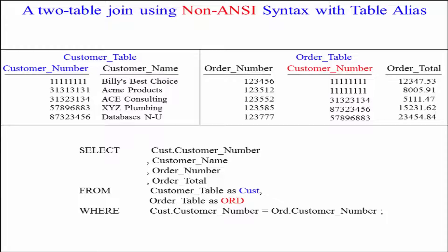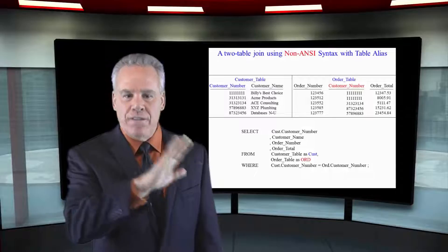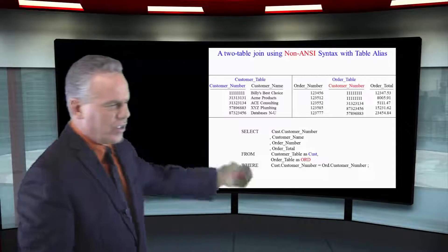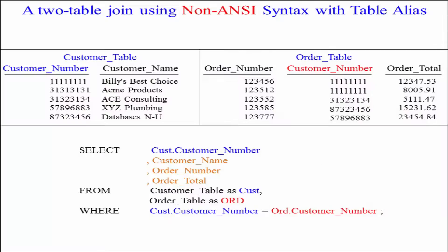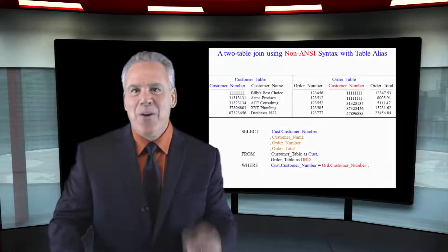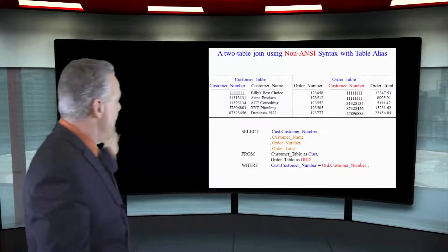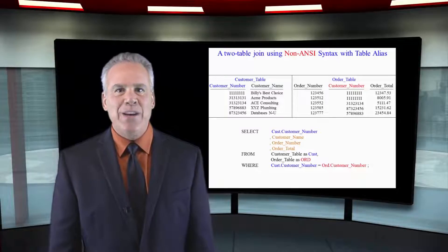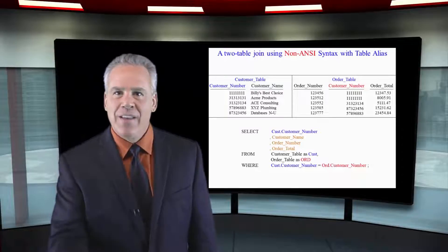So now that we've aliased the table names, this makes fully qualifying so much easier. Now I can say select cust dot customer number, customer name, order number, order total from customer table as cust, order table as ord. And then the where's going to be where cust dot customer number equals ord dot customer number. That's the way you do it when you go big time.